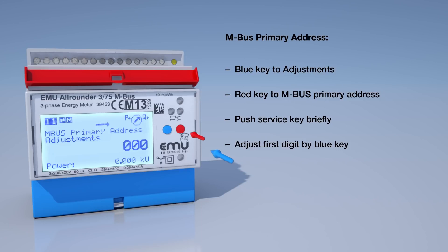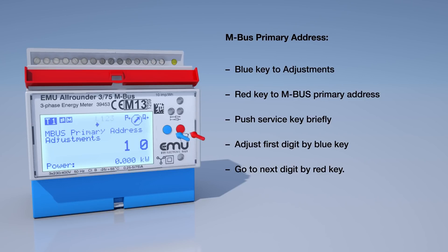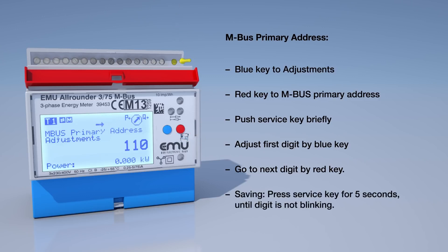The blue button now lets you change the first number. Press the red button to continue on to the next digit, which you can then adjust using the blue button. Once you have configured the MBUS Primary Address, hold the service button for 5 seconds to save.